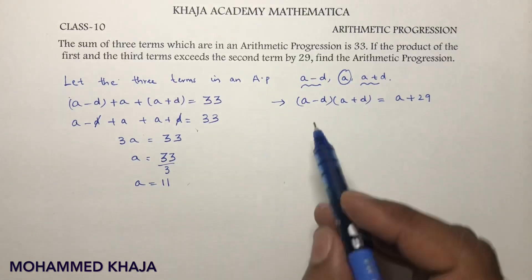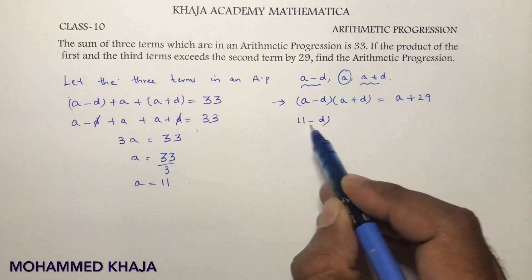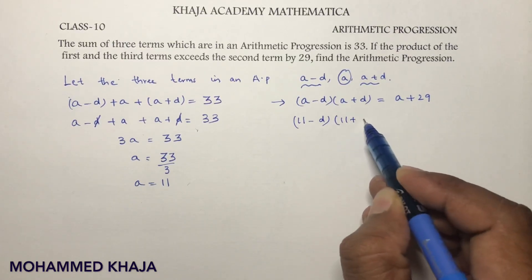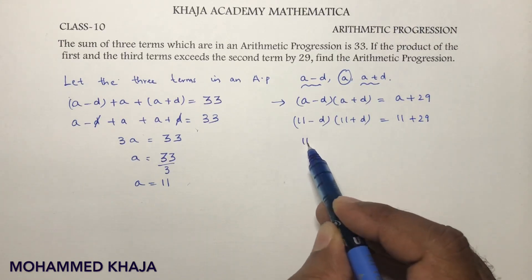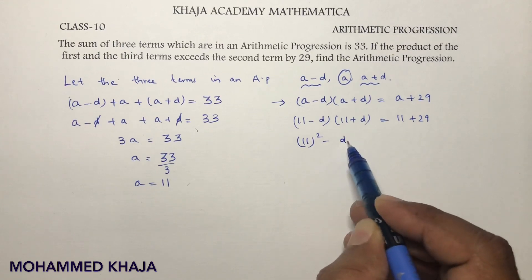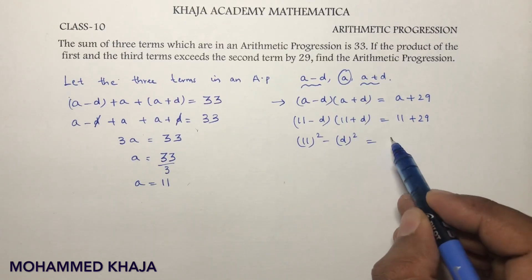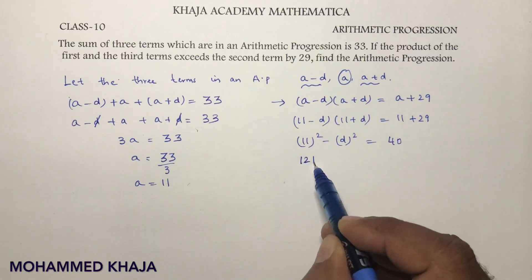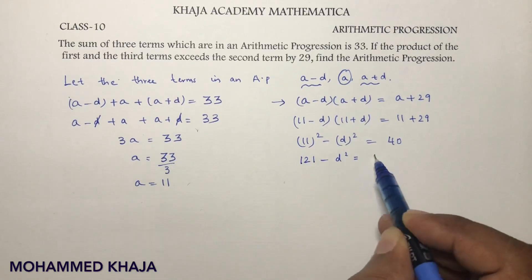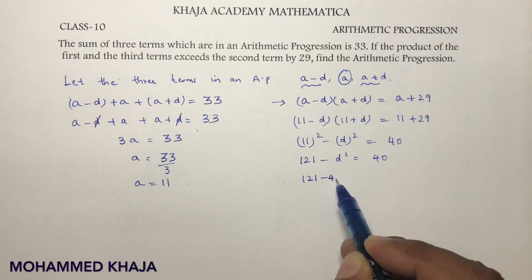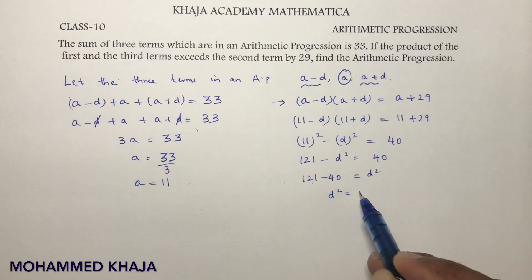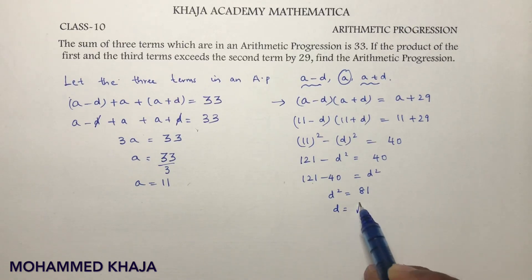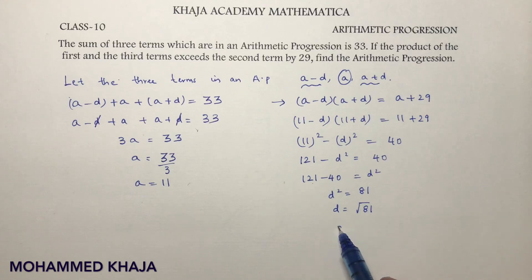Substituting a equals 11 into the second condition: (11 minus d)(11 plus d) equals 11 plus 29, which equals 40. Using the identity (a minus b)(a plus b) equals a squared minus b squared, we get 121 minus d squared equals 40. So d squared equals 121 minus 40, which is 81.